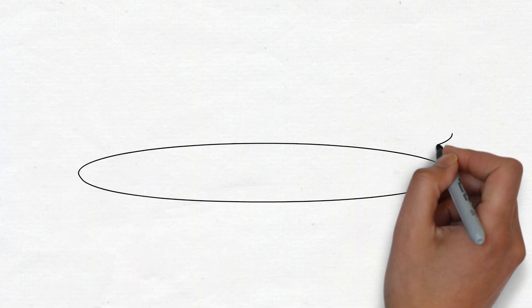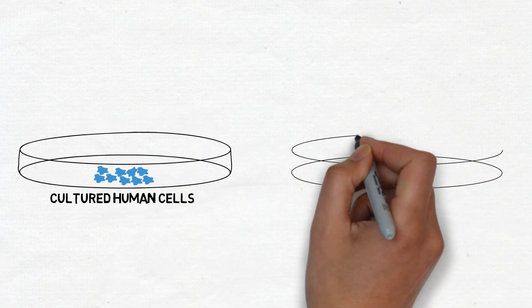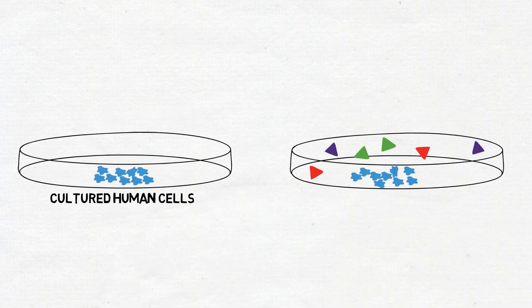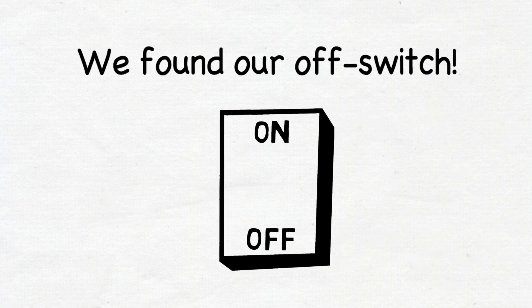To see if we could use these anti-CRISPRs in gene editing, we introduced them into cultured human cells. We discovered that each of the anti-CRISPR proteins dramatically inhibited the ability of Cas9 to edit human DNA. We found our off switch.